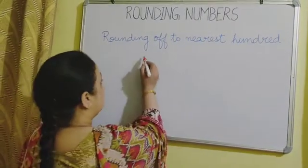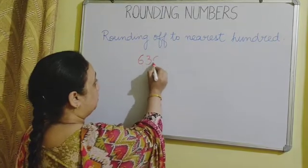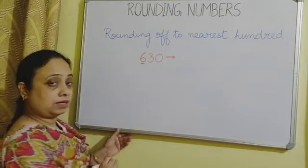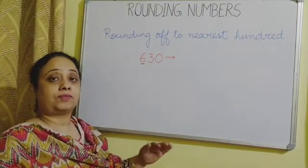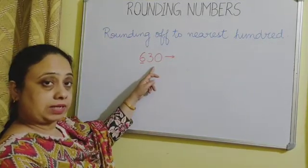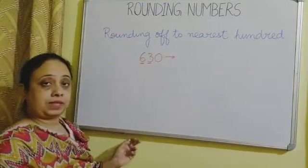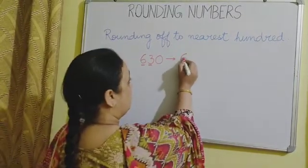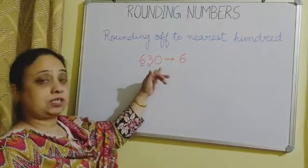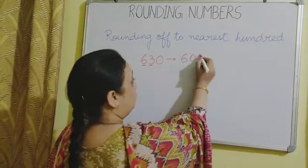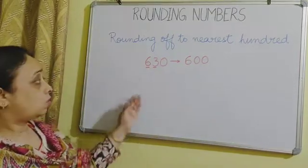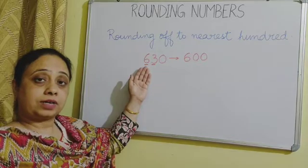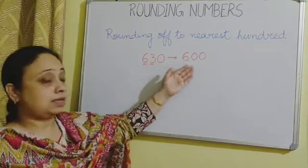Suppose we have the number 630. We have to find the 100's number, which is 600 here. We use the same procedure as rounding off to the 10's value. We look to the right — that is the 10's digit. The digit is 3, and this 3 is less than 5. So what happens to 6? It will remain unchanged, and the digits to the right will change to 0. So if the 10's digit is less than 5, the value of the 100's place remains the same.